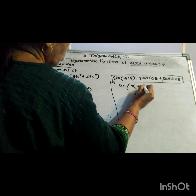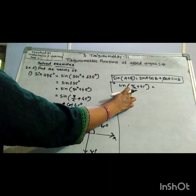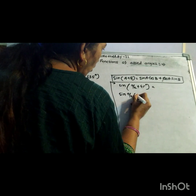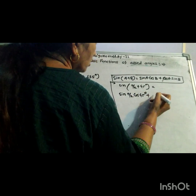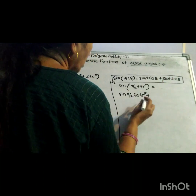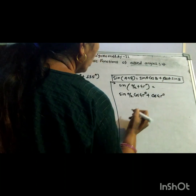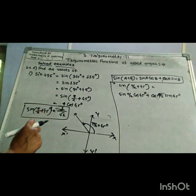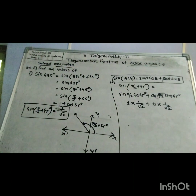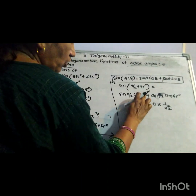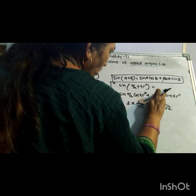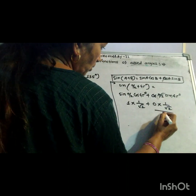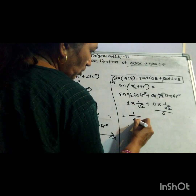Using the addition formula for sin(π/2 + 45°): angle a = π/2 (90°) and b = 45°. So sin(a)cos(b) + cos(a)sin(b) = sin(π/2)·cos(45°) + cos(π/2)·sin(45°) = 1·(1/√2) + 0·(1/√2) = 1/√2. This confirms the answer is 1/√2.